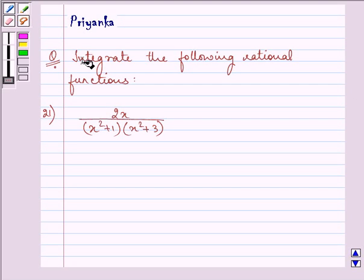Hello and how are you all? The question says integrate the following rational functions. The function given to us is 2x upon x square plus 1 into x square plus 3.